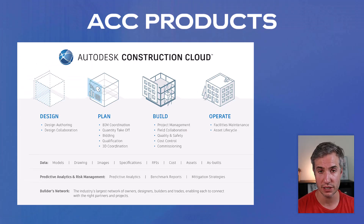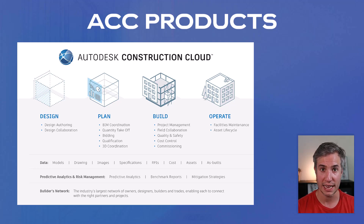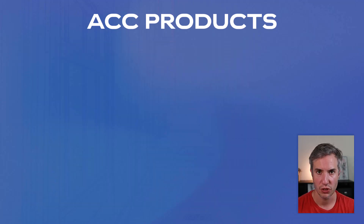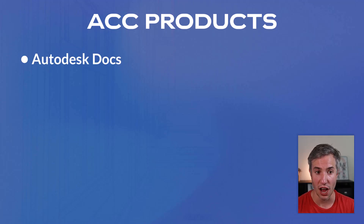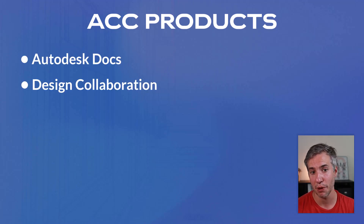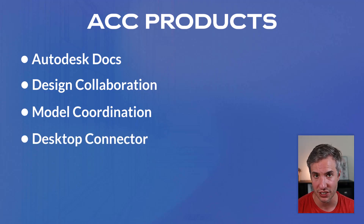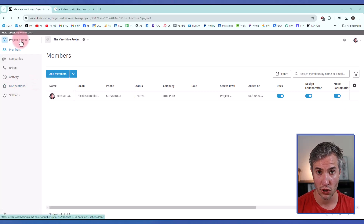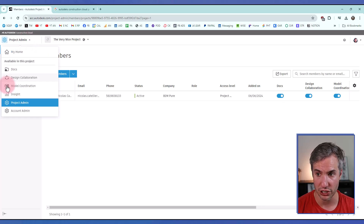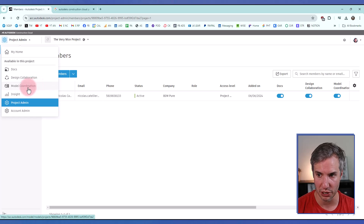ACC is a vast ecosystem of different products for different customers at different price points. In our case, we're going to focus on ACC products made specifically for design. The key ACC products for design professionals are Autodesk Docs, Design Collaboration, Model Coordination, and the Desktop Connector. When you are logged in on Autodesk Construction Cloud and click on the upper left inside of a project, you can see these different modules — Docs, Design Collaboration, and Model Coordination.